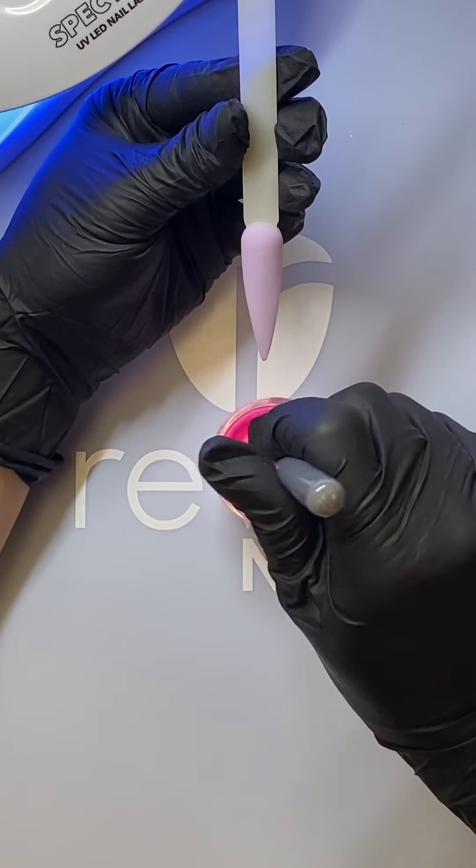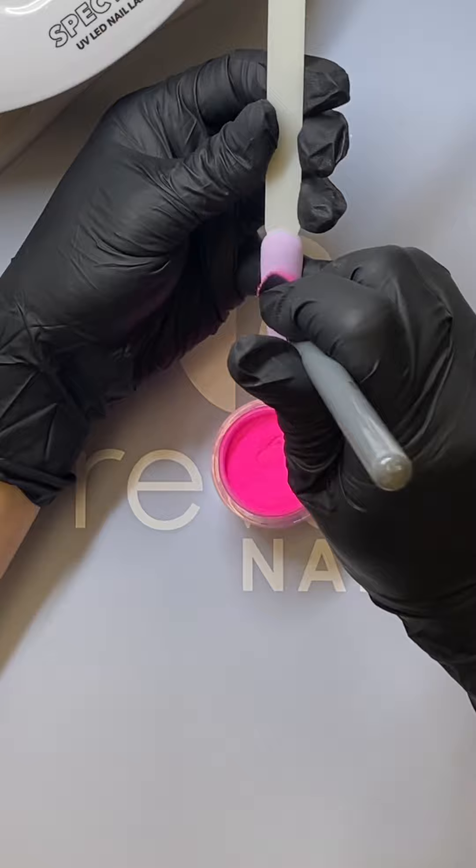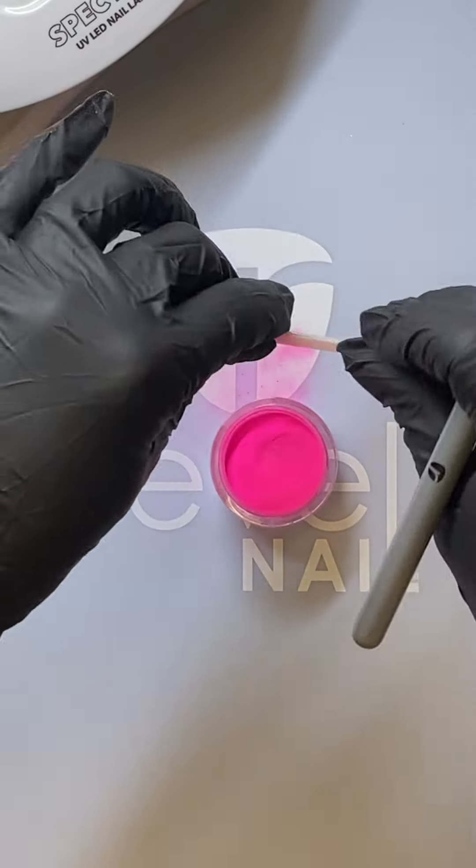Next you're going to want to take your ombre brush or a dense eyeshadow brush and dip it into the color that you want your aura to be. We chose D163 Staff. Create your aura and then cure again for 60 seconds.